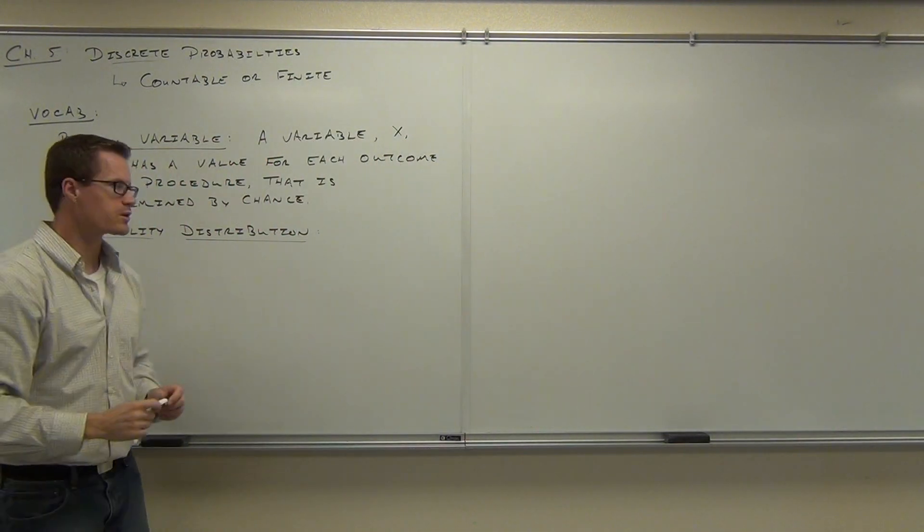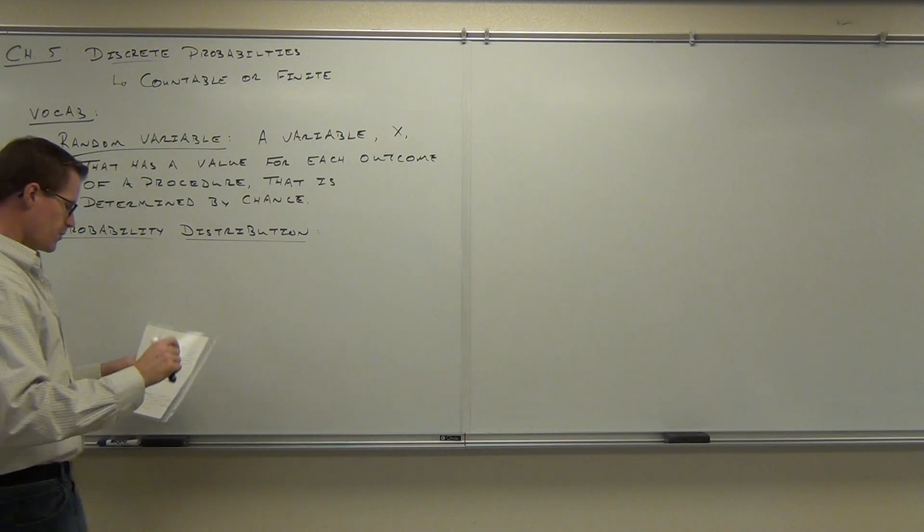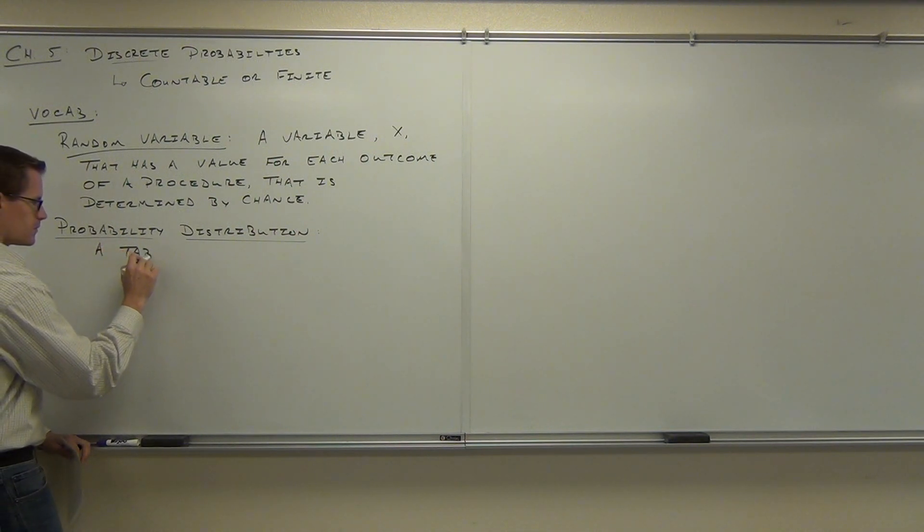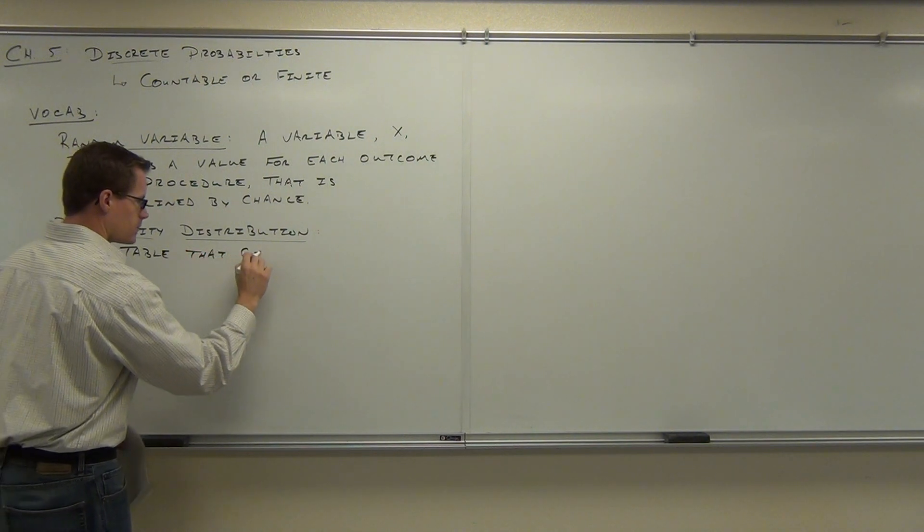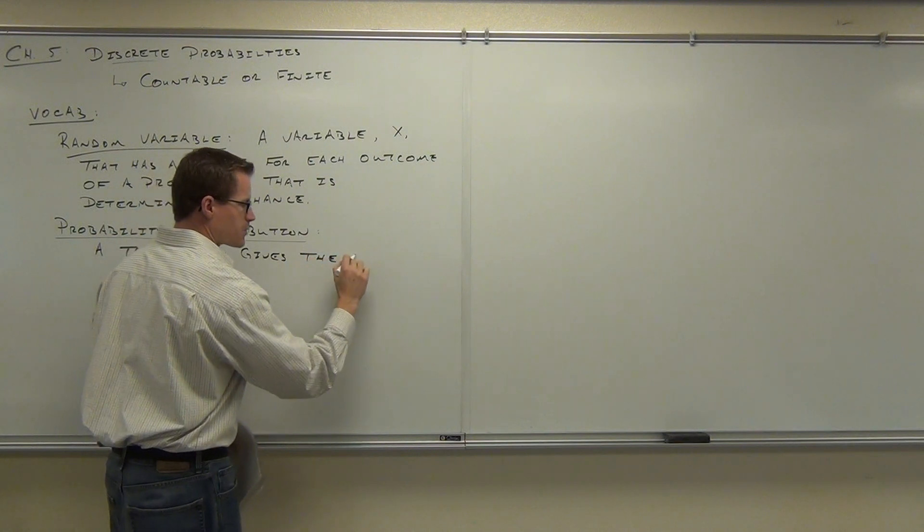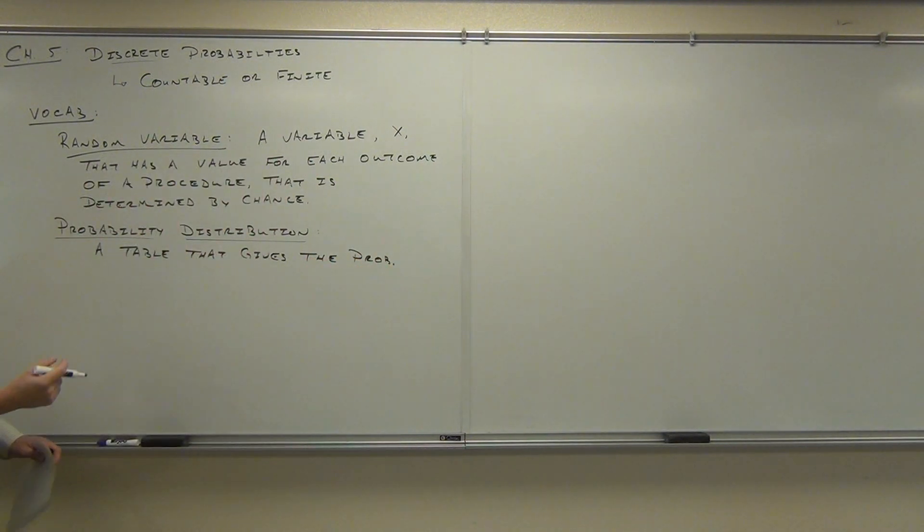It just puts it in a table for us. So probability distribution, what this does, it's a table that gives us the probability for each value of a random variable. A table that gives the probability for each value of a random variable.